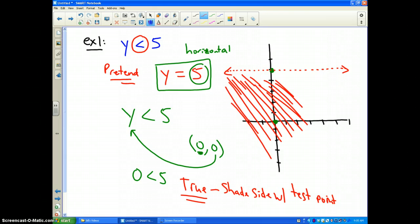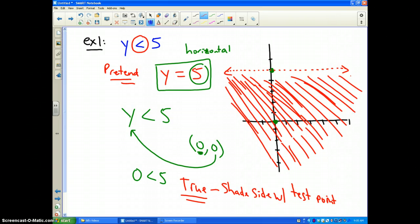But this entire side of the boundary line is the answer to our inequality y is less than five. Because every point in that shaded area will work. Further questions, please ask me during class.